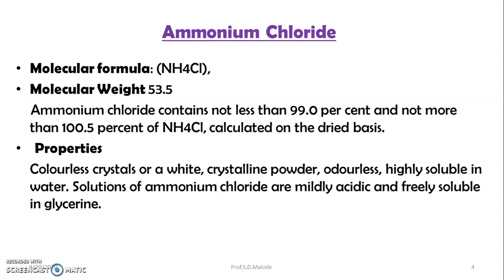The classical example from this expectorant class is ammonium chloride. The molecular formula is NH4Cl and the molecular weight is 53.5. It contains not less than 99% and not more than 100.5% of ammonium chloride, calculated on the basis of dried substance.